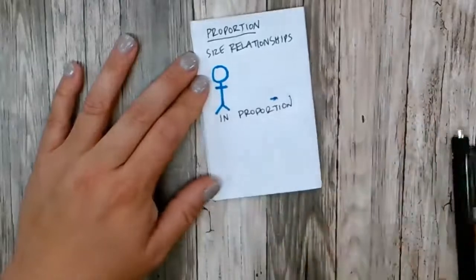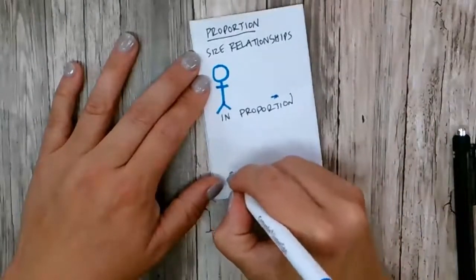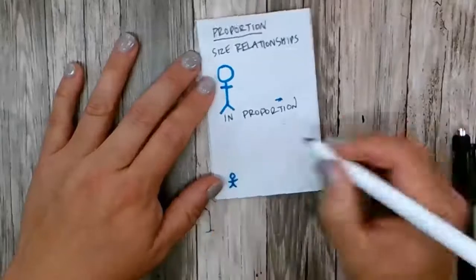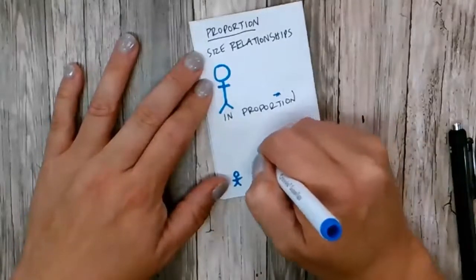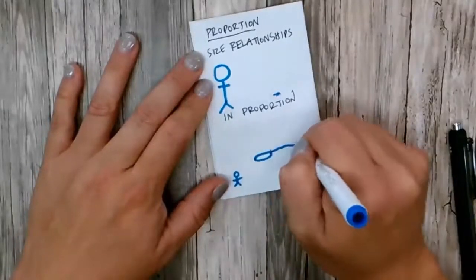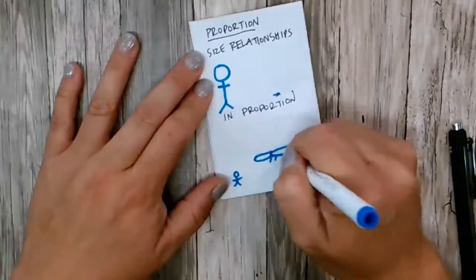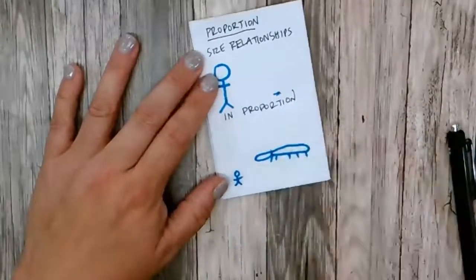It would be out of proportion if the person was ant size and the ant was large.